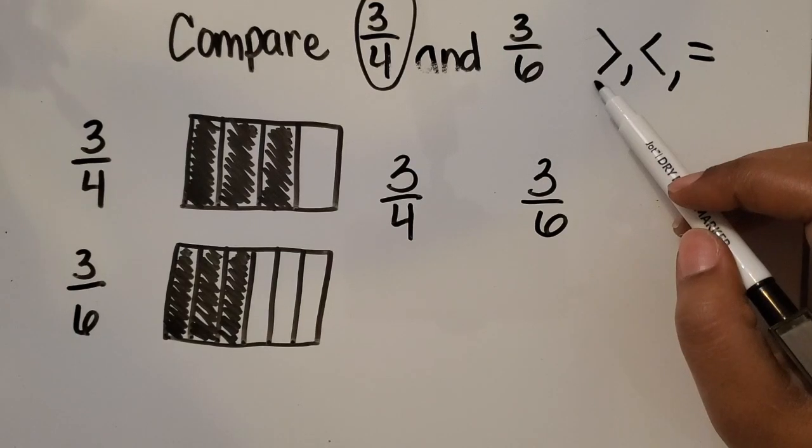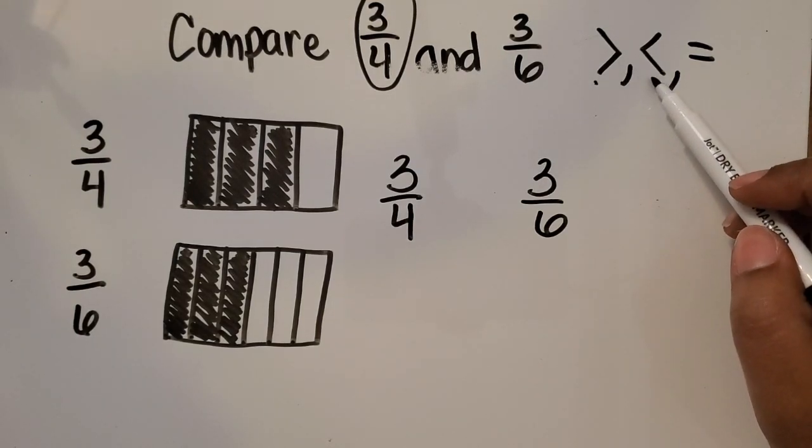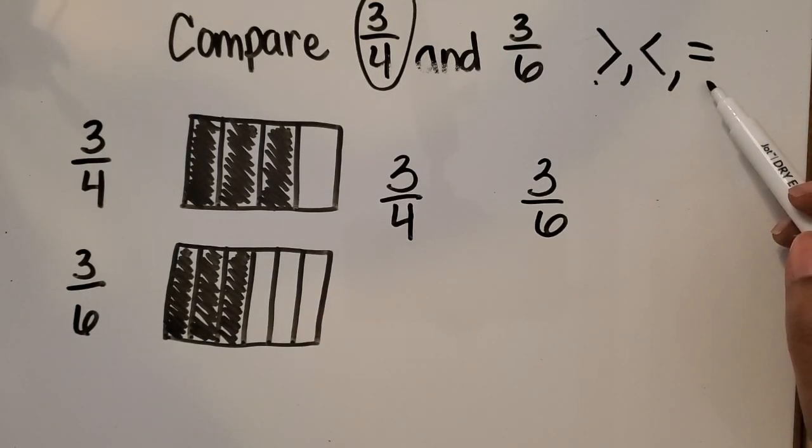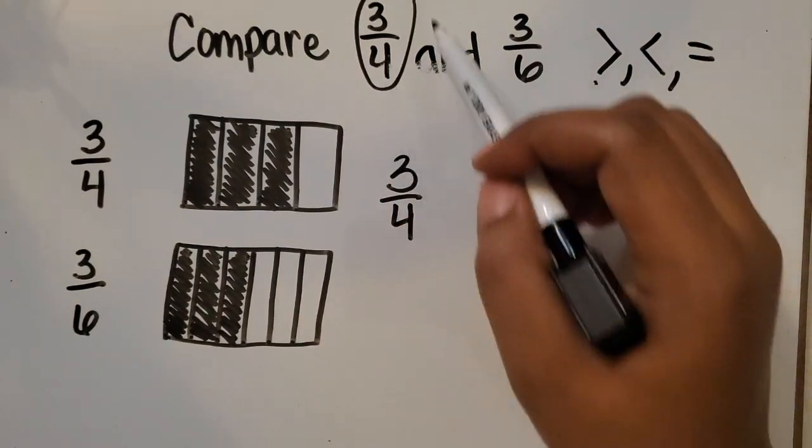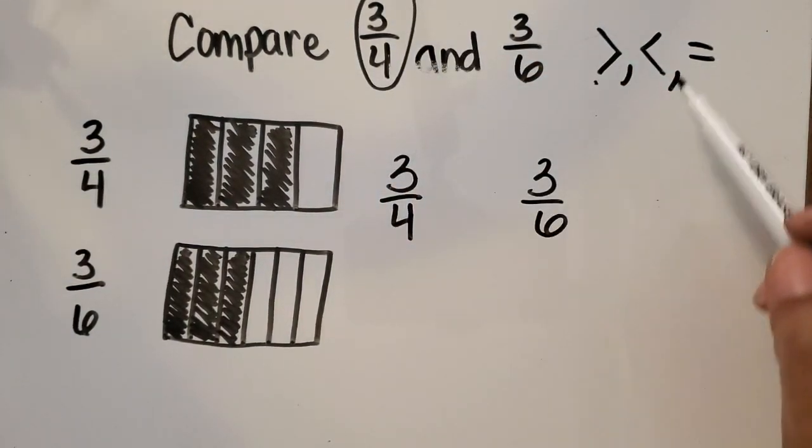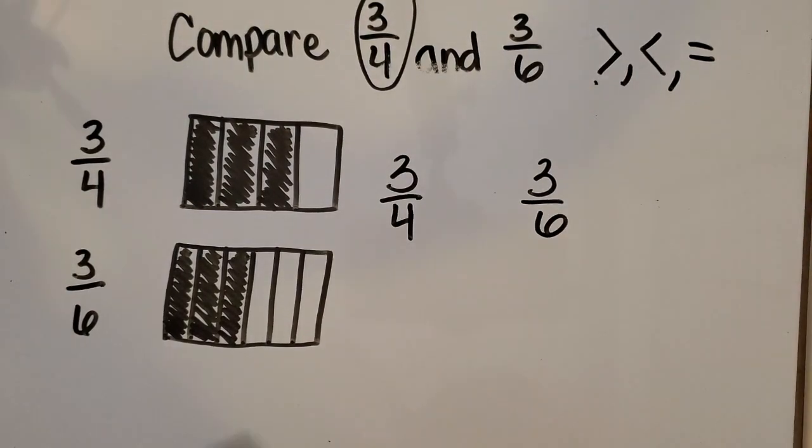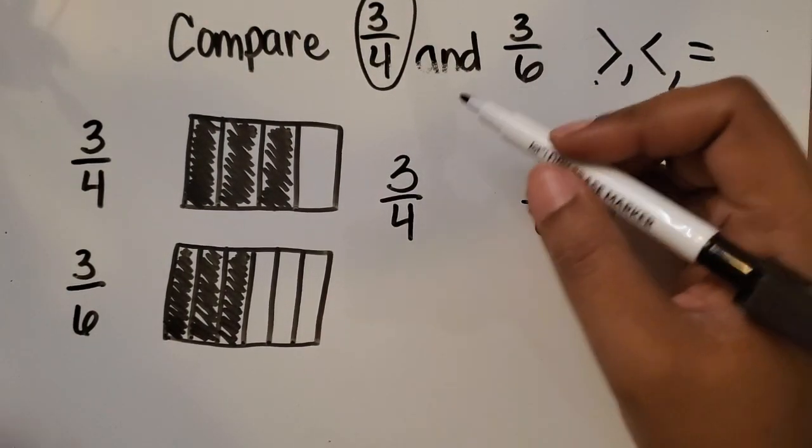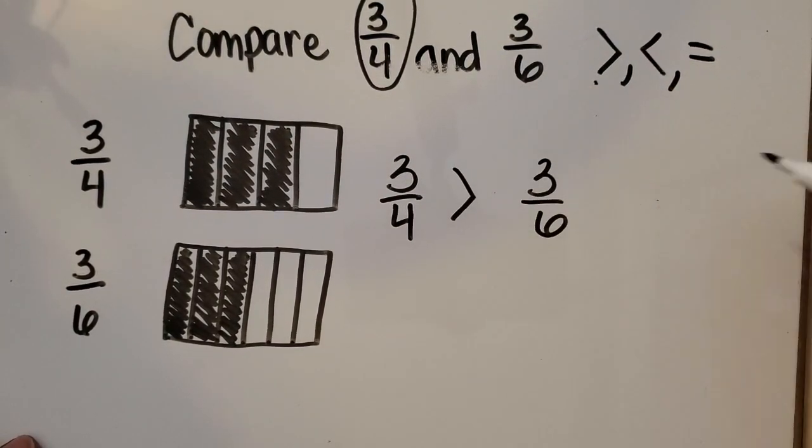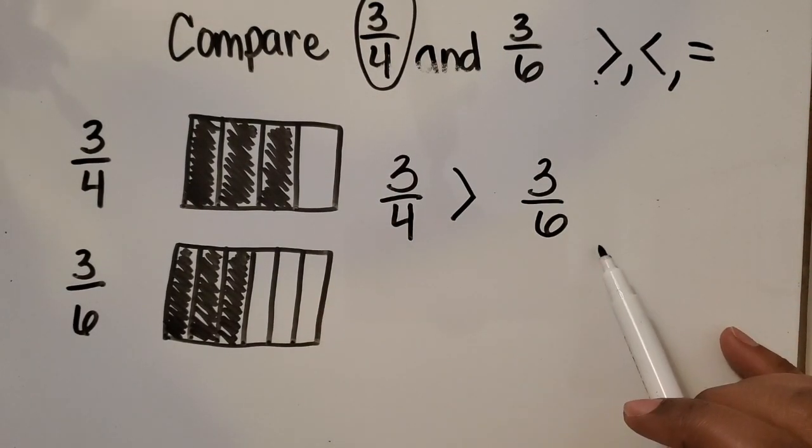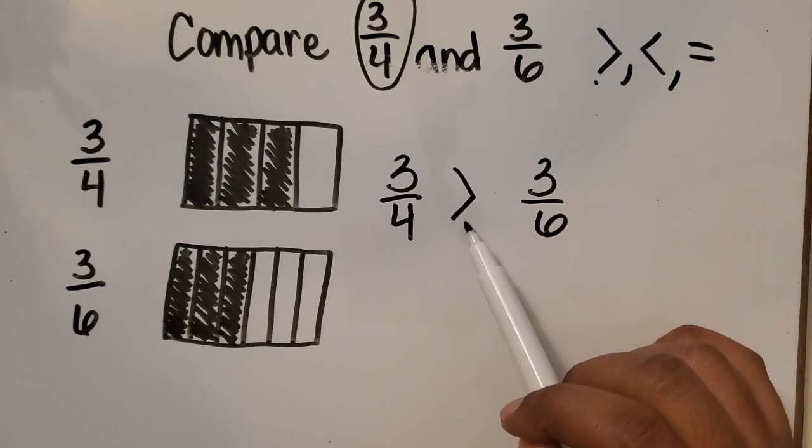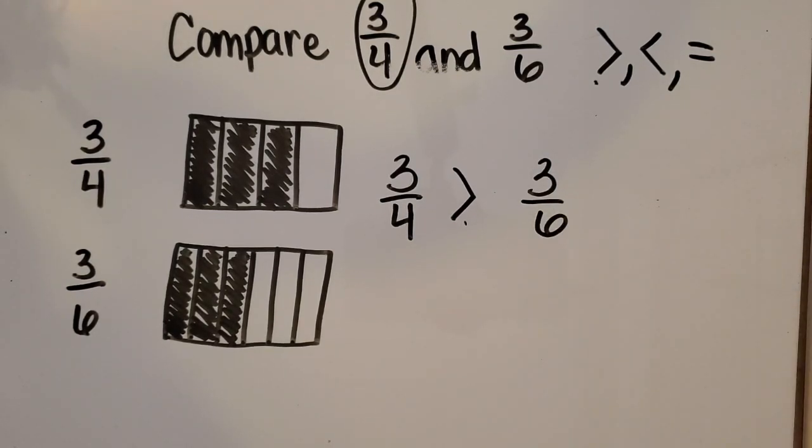The greater than symbol, less than symbol, or equal to symbol? We know 3 fourths is greater, so I circled that one. My symbol is going to face or be open to the greater fraction or the greater value. So let's read our comparison statement now: 3 fourths is greater than 3 sixths.